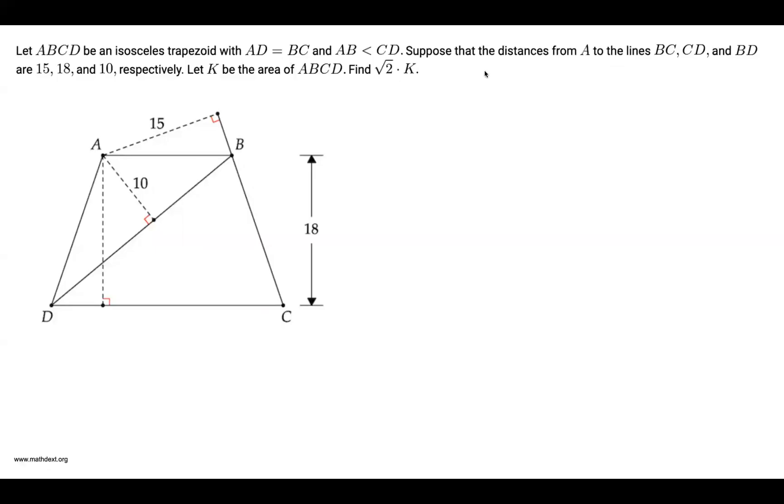Hello, everybody. Today we will be solving problem 9 of the 2021 AIME. The problem reads: let ABCD be an isosceles trapezoid with AD equals BC and let AB be less than CD. Suppose that the distances from A to the lines BC, CD, and BD are 15, 18, and 10 respectively. Let K be the area of ABCD. Find the square root of 2 times K.